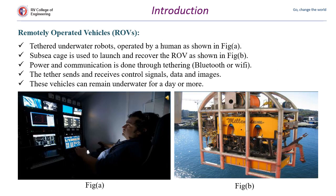The first type is remotely operated underwater vehicle. These are triggered by the use of Bluetooth or Wi-Fi by an operator, as shown in figure A. The launching and recovery of the remotely operated vehicle is done by a subsea cage, as shown in figure B. Communications are also done through telemetry, such as sending and receiving signals, data, and images.